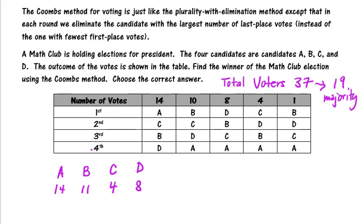Last place votes would be 4th. So D has 14 then I notice that A takes all of the other numbers. Since there are 37 voters we should automatically know that 23 last place votes go to A. So that means that we are now going to delete A.